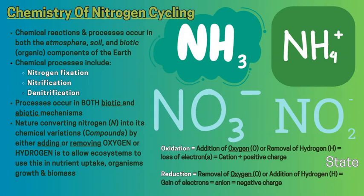In reverse, we also have a reduction chemical reaction whereby the nitrogen compound removes oxygen or adds hydrogen, gaining electrons. This makes it an anion or negative charge, because adding free electrons to the nitrogen compound creates more electrons than protons, making it a negative charge.